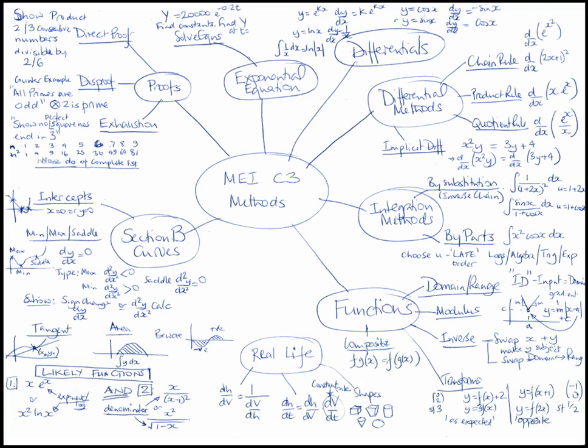Hello, this is a one-pager on the MEI C3 paper, that's the one on methods, mathematical methods. It's in the form of a mind map and it's intended to focus on the questions that may come up as well as the methods. We've got about seven or eight main elements here.